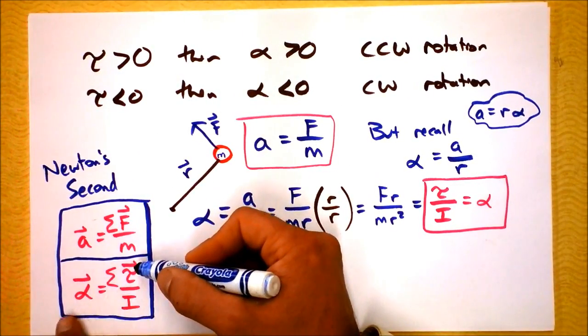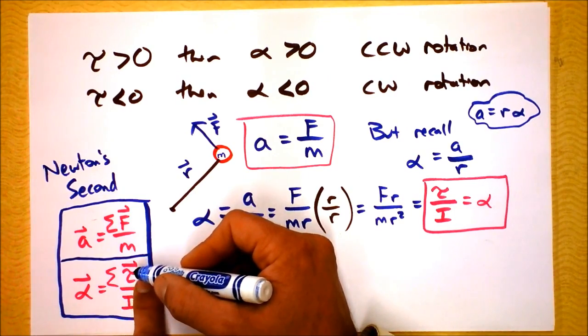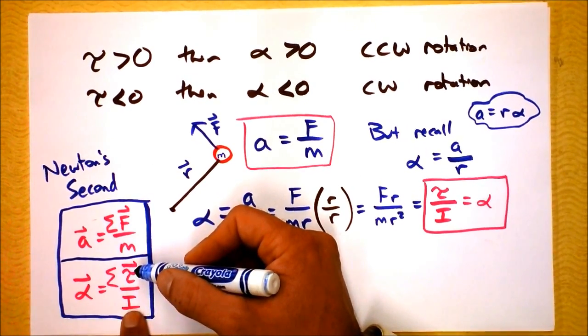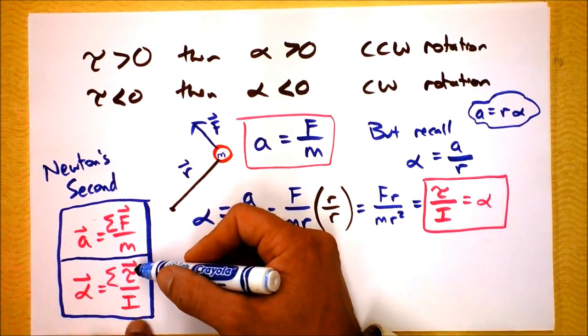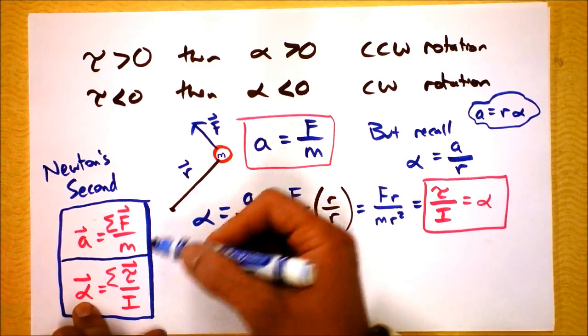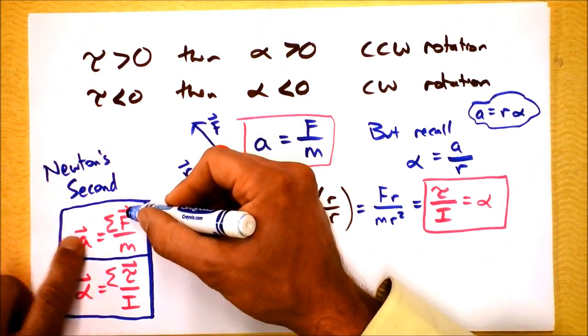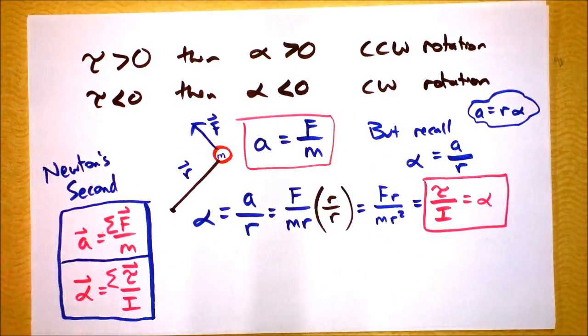Torque causes angular acceleration. For a given torque, if the moment of inertia is big, then the angular acceleration will be small, and if the moment of inertia is small, then the angular acceleration will be big. Just like for a given force, acceleration will be big if you have a small mass, and acceleration will be small if you have a big mass. Okay? I don't think there are any surprises right there.